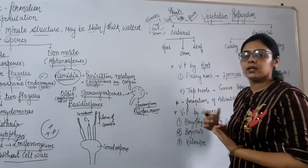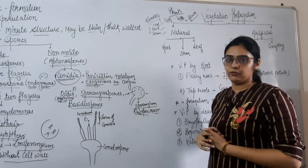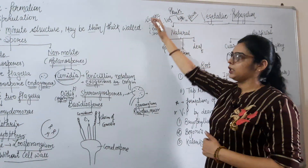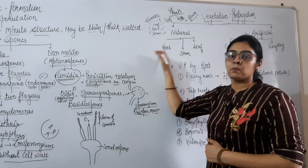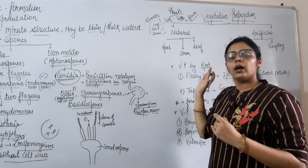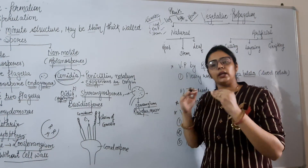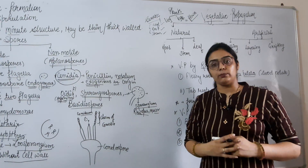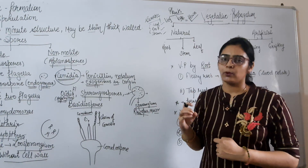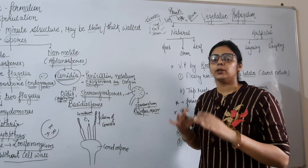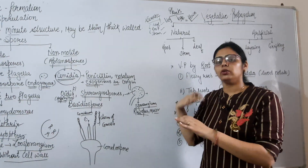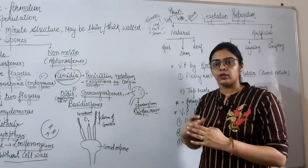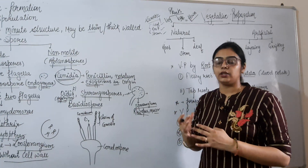The reproductive part of the plant is the flower. The flower is the reproductive unit of the plant and is covered in our second chapter — sexual reproduction in flowering plants. So if we form a new plant from the vegetative parts — leaf, root, or stem — that type of reproduction is known as vegetative propagation.